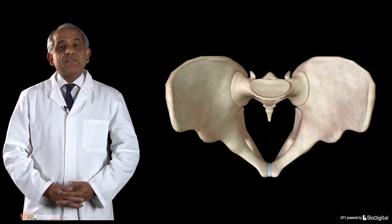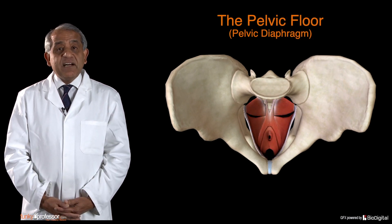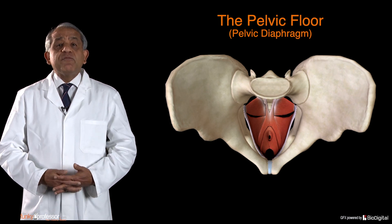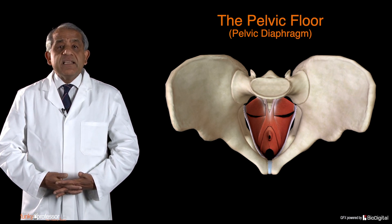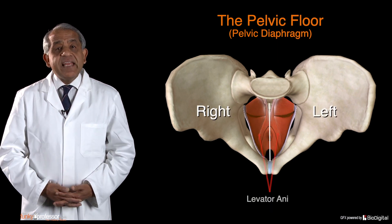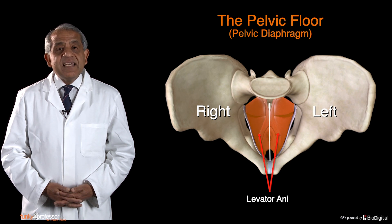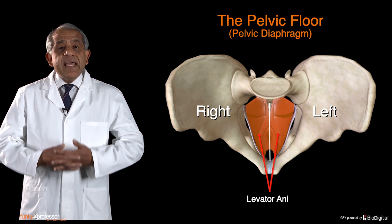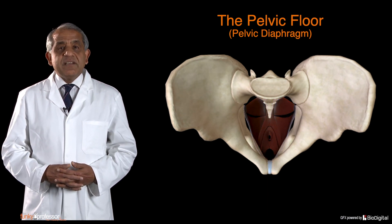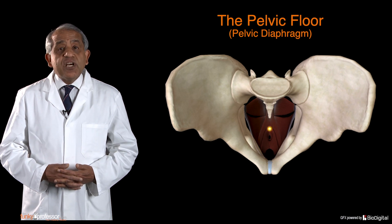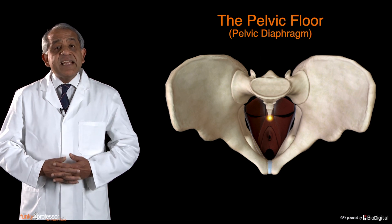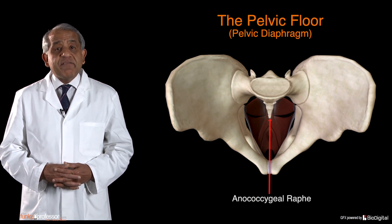Below the plane of the pelvic brim is the true pelvic cavity, and this pelvic cavity has a floor — the pelvic diaphragm. The pelvic floor is made up of two muscular sheets, one on the right side and one on the left, each being the levator ani muscle of that side. The two levator ani muscles interdigitate with each other in an anteroposterior direction, from the back of the rectoanal junction to the tip of the coccyx. This interdigitation is called the anococcygeal raphe.